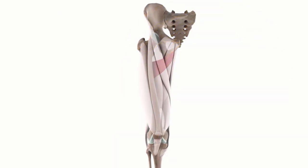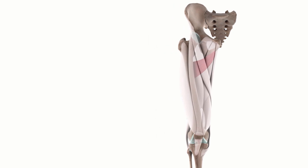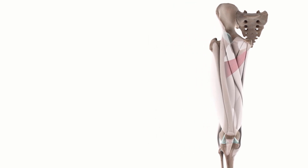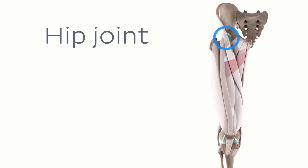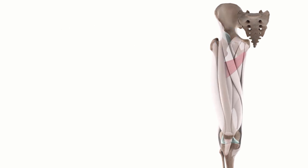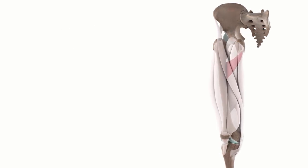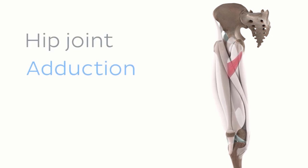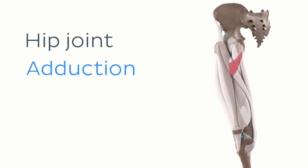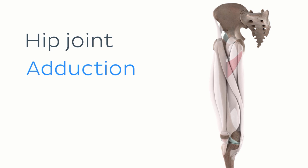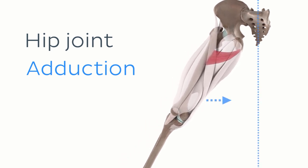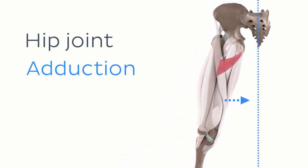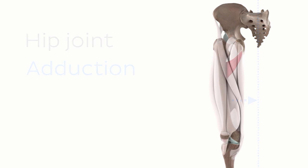Now that we've covered some basic important facts about this muscle, let's move on to talk about the actions of this muscle. The adductor minimus acts specifically on the hip joint and as the name suggests, the contraction of this muscle adducts the thigh at the hip joint. This means that the action of this muscle facilitates the movement of the thigh towards the midline of the body, as you can see here.